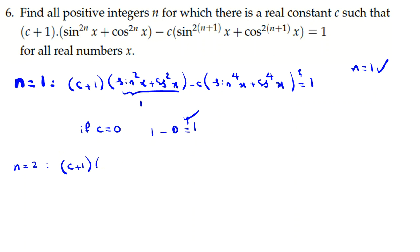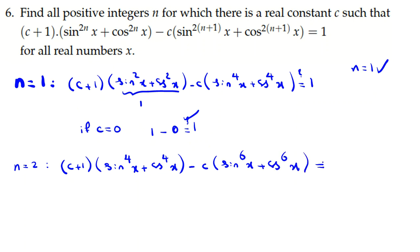Once you understand the idea from one example, you can generalize it. For n=2, I replace: minus c·sin⁶x + cos⁶x equals 1, for what c? Here we have sine and cosine, and since this must hold for all real x, I want to express it as a polynomial p(cos x). Since it equals zero for infinitely many x, all coefficients must be zero.